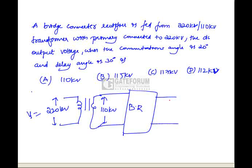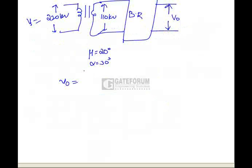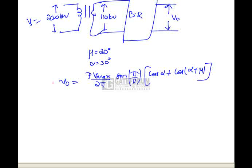He has given commutation angle is 20 degrees. That means this is a rectifier which is having some amount of source inductance. Commutation angle is nothing but an overlap angle which equals 20 degrees and delay angle alpha is 30 degrees. We have to find output voltage V0, that is the average output voltage. It is given as P times Vmax by 2 pi times sin pi by P cos alpha plus cos alpha plus mu.